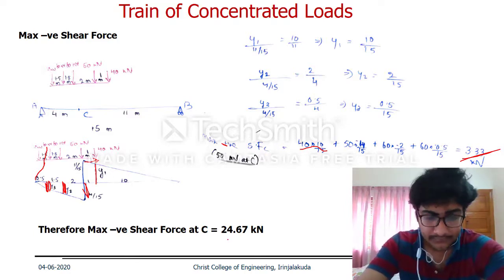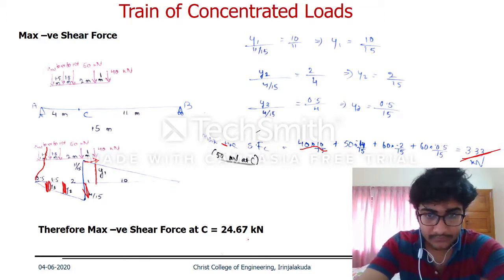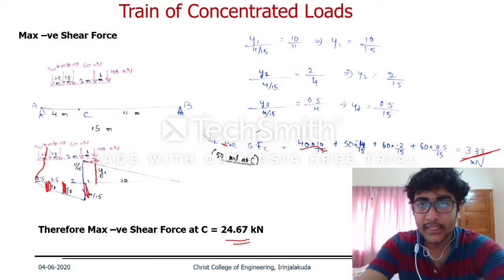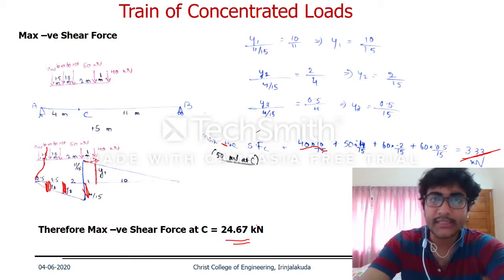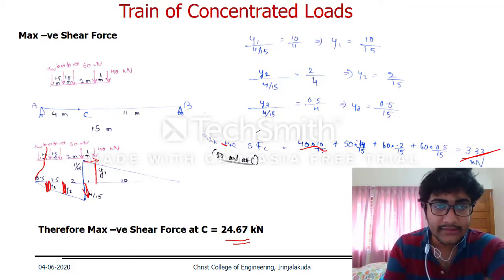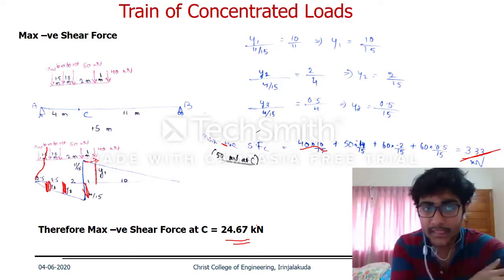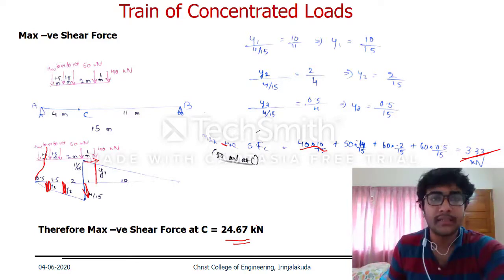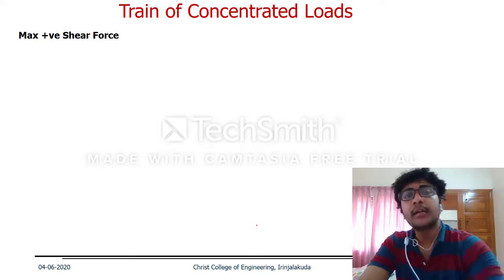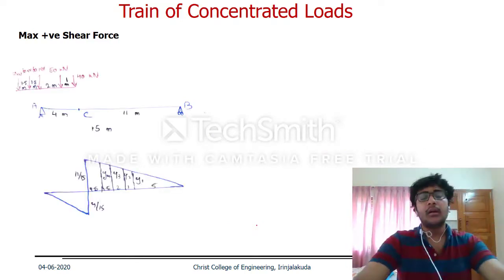Therefore, the magnitude of maximum negative shear force is 24.67 kN, and it occurs when the 40 kN load, the foremost load, is at the section. That is the concept you need to grasp for trial and error.